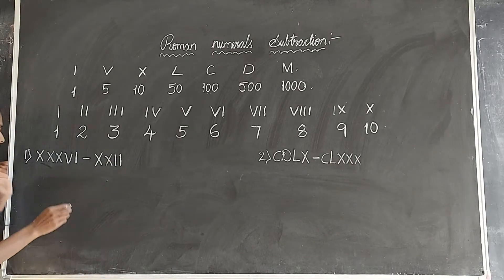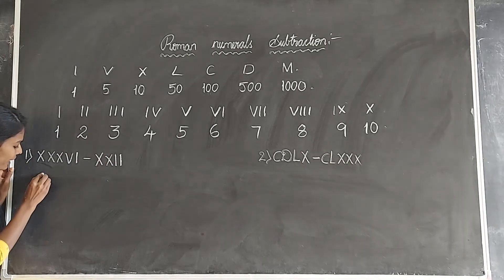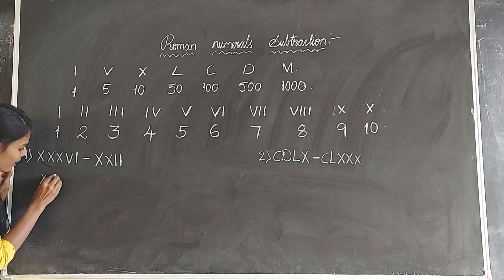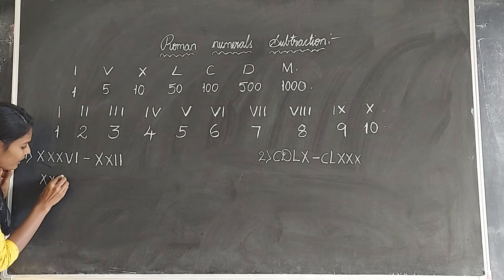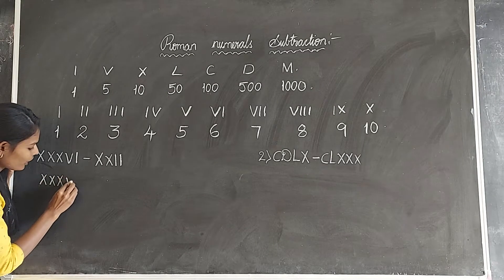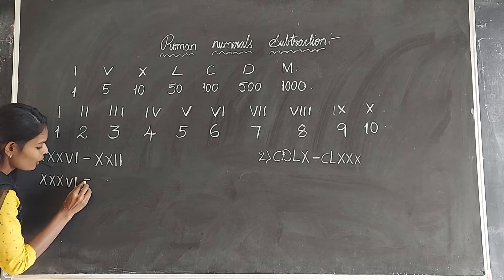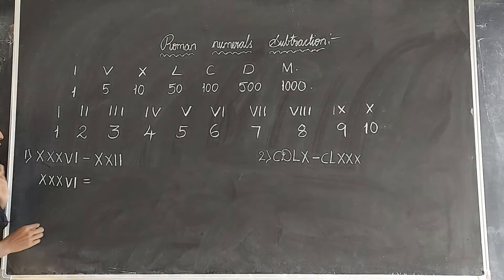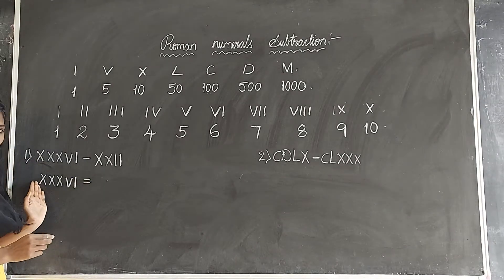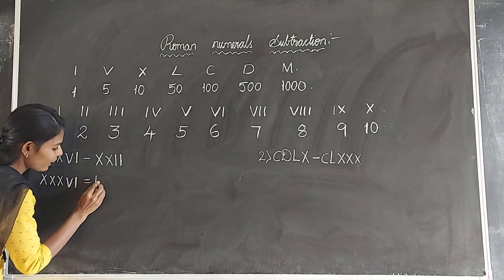First we take X, X, X, V, I. What is the value of X, X, X, V, I? That gives us 36.